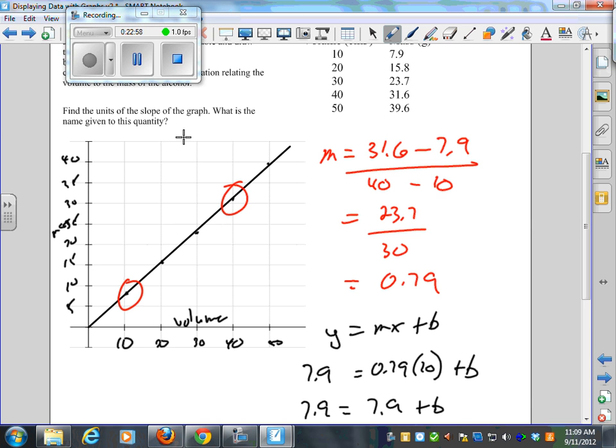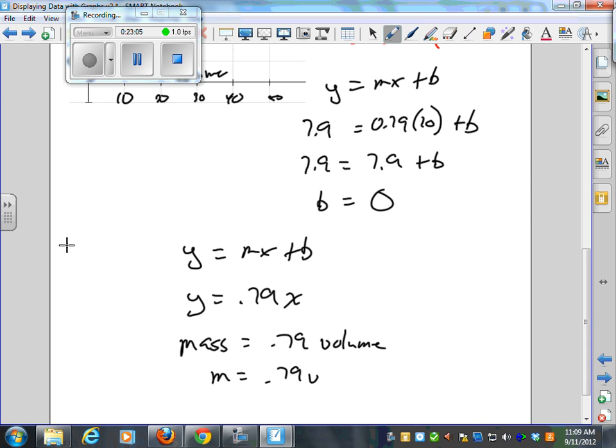Find the units of the slope of the graph. What are the units of mass? Grams. What are the units for volume? Cubic centimeters. What are the units for the slope? Grams per cubic centimeter. What's the slope in this case again? Density. The density of this alcohol is 0.79 grams per cubic centimeter. Every slope has a meaning. Every slope has a meaning. In this case, once again, I gave you an easy one. It's the density.